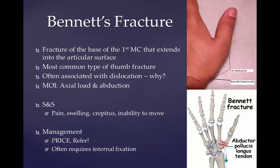Bennett's fracture is a fracture of the base of the first metacarpal bone that extends into the carpometacarpal joint. This intraarticular fracture is the most common type of fracture at the thumb, and it nearly always is accompanied by some degree of subluxation or dislocation of the carpometacarpal joint. Symptoms include instability of the carpometacarpal joint of the thumb accompanied by pain and weakness in the pinch grasp. Characteristic signs include pain, swelling, and ecchymosis around the base of the thumb and thenar eminence, especially over the carpometacarpal joint.